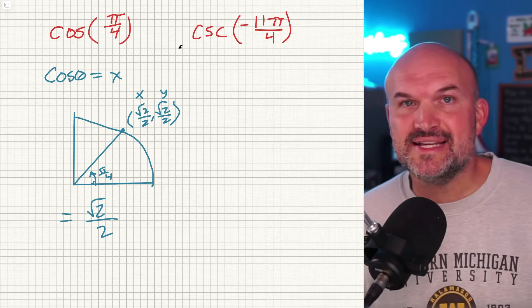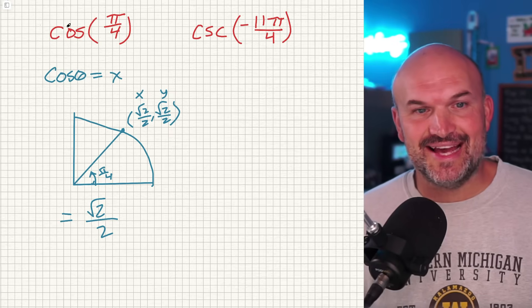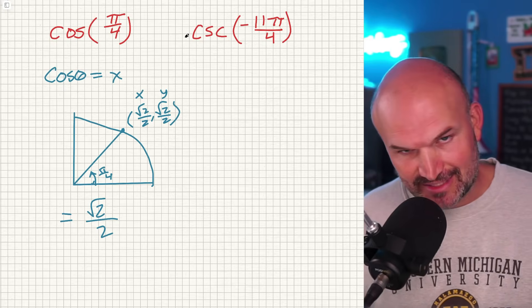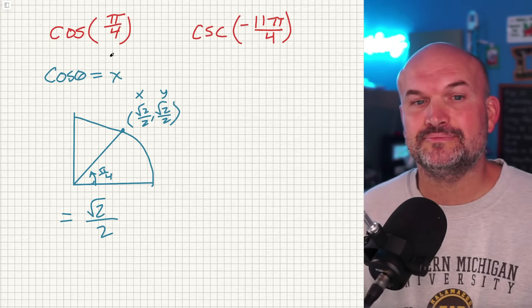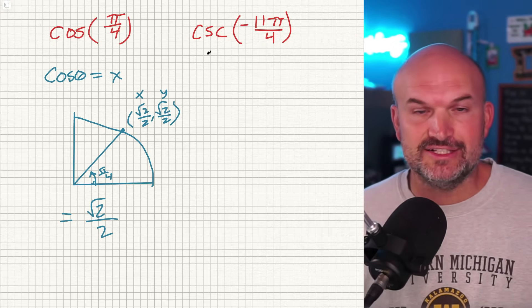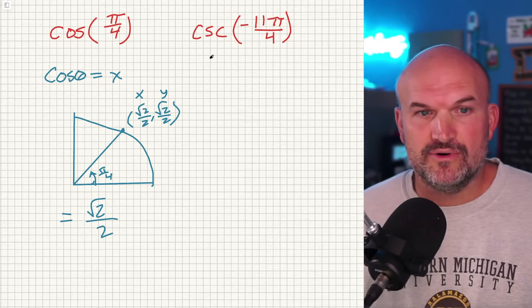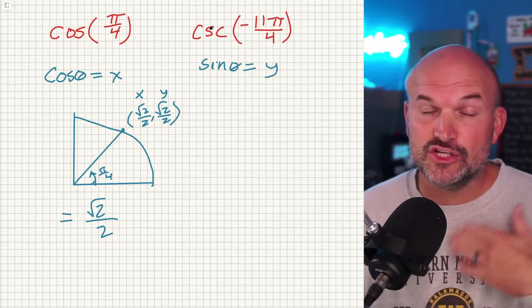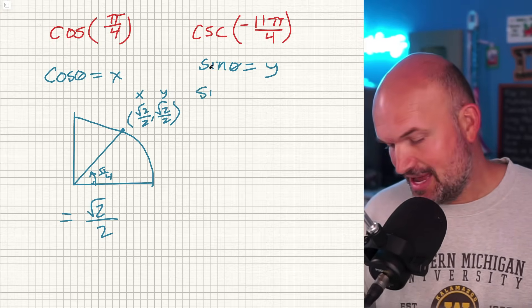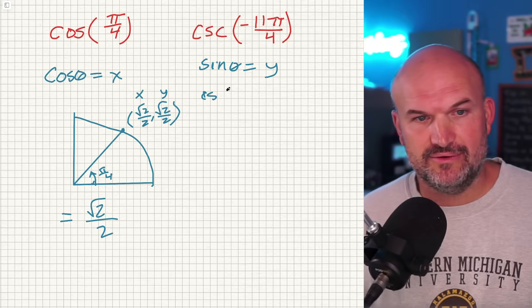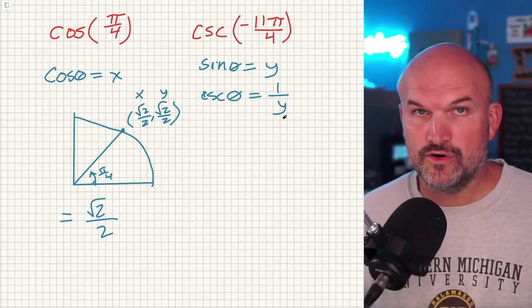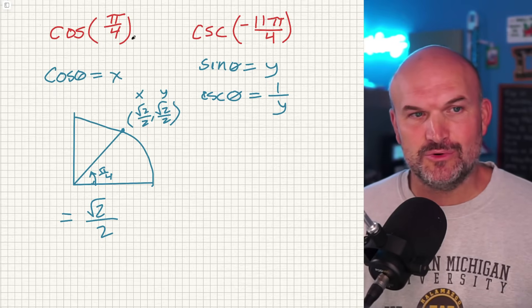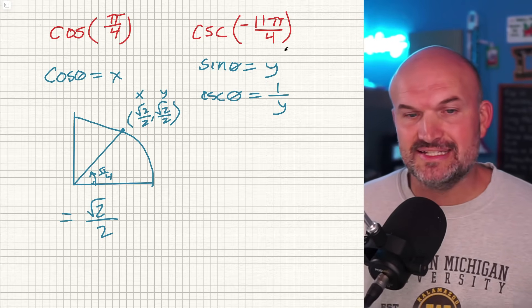Now let's get into the cosecant. A common mistake students make is seeing 'c' and 'c' and thinking cosecant is the reciprocal of cosine — that's not the case. Cosecant is actually the reciprocal of the sine function. So: sine of theta represents the y-coordinate, and the cosecant of theta equals 1/y.